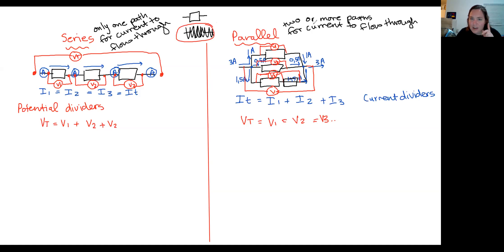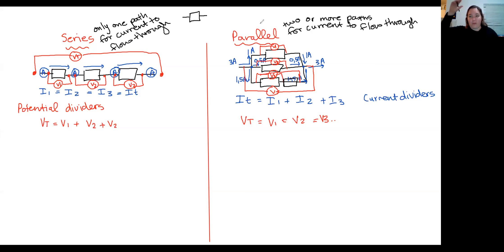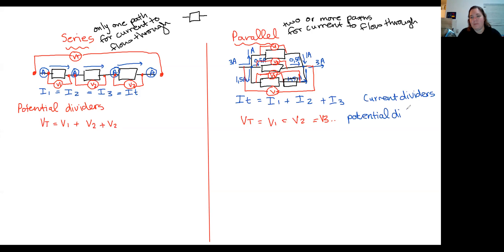If you're here on Thursday I'll make sure I answer that question there, because I can go and check with the person who does the marking of physics — they decide the rules and will be able to tell you from the highest ranks. So in parallel, our potential difference stays the same or is equal across branches. And in series, our current is equal throughout.